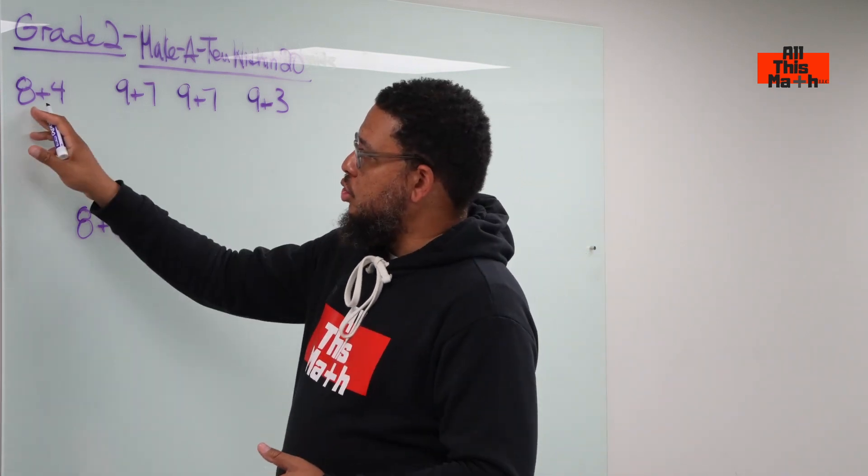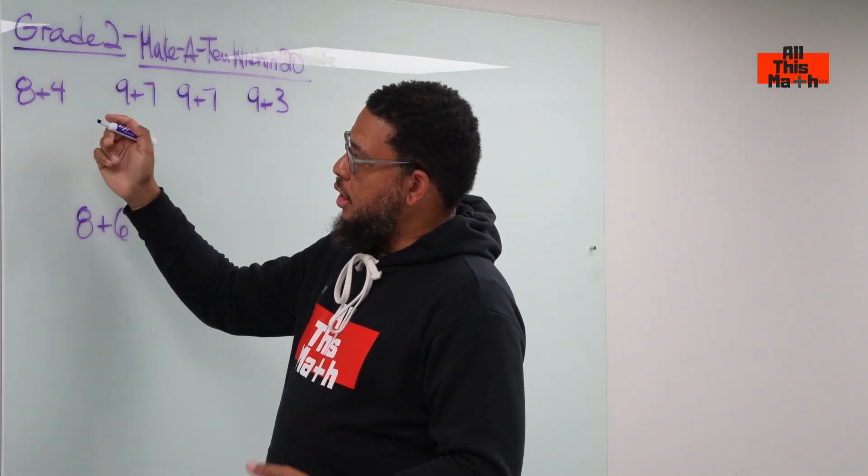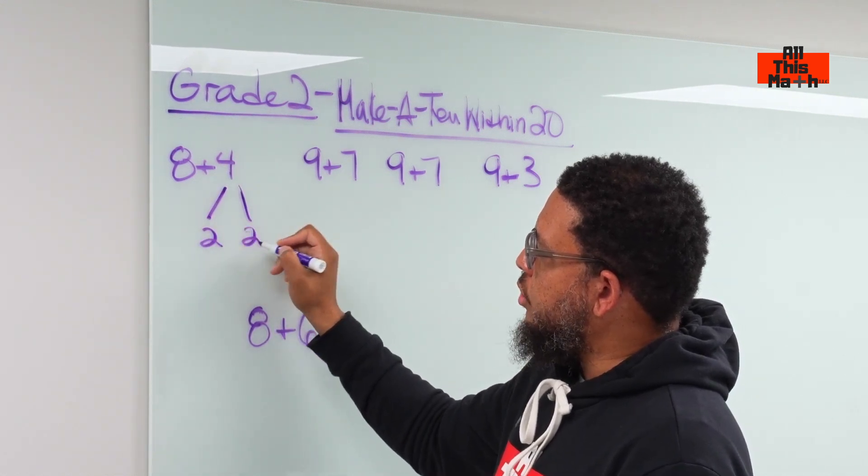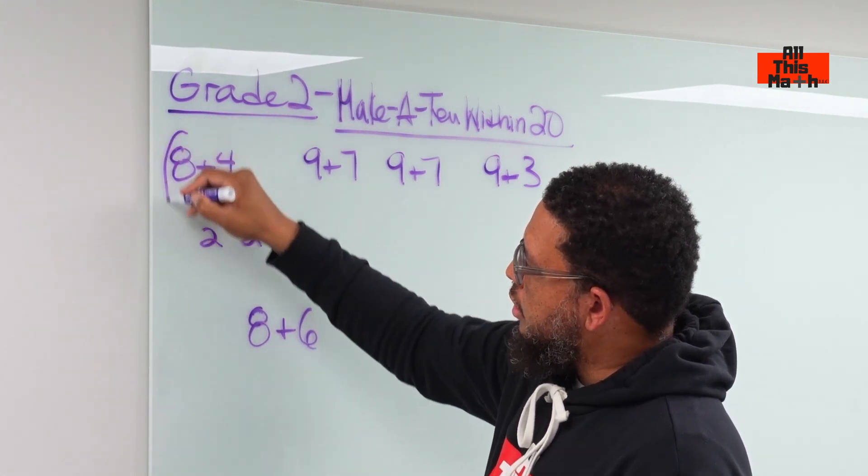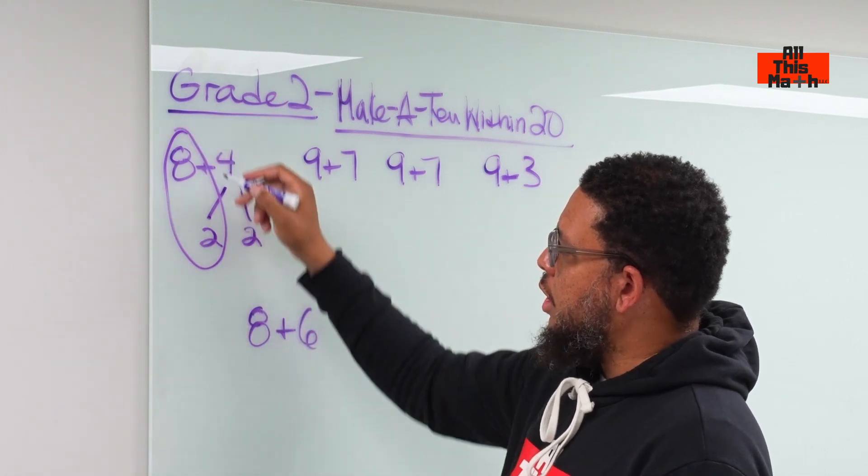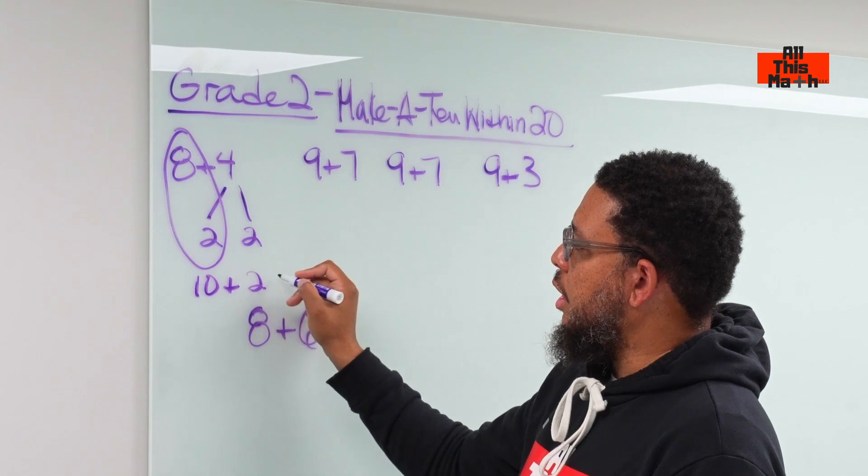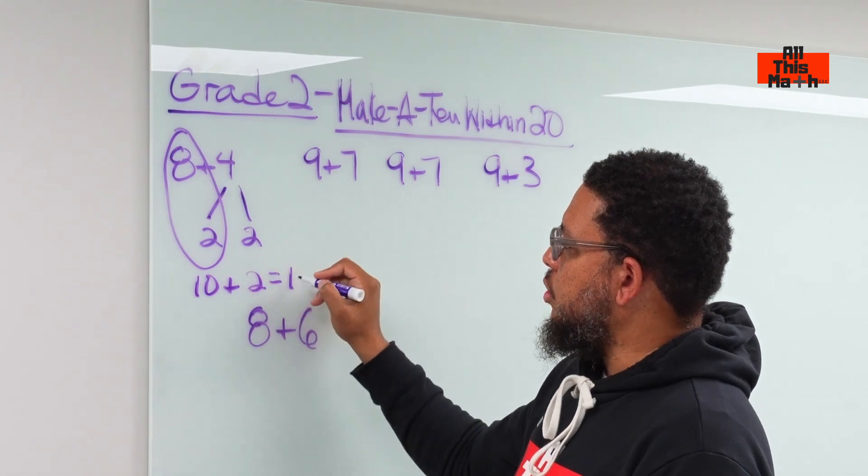So, where are we going to get the 2 from that we need to put with the 8 to make 10? We're going to get it from the 4. So, we're going to break the 4 down into 2 and 2. And now this 8 and 2 comes together and becomes a 10 and then we add the 2 that was left over. And 10 plus 2 is 12.